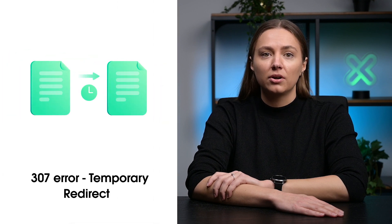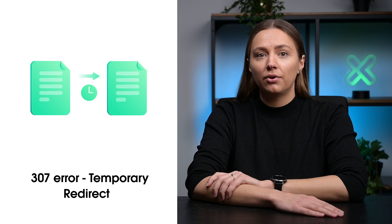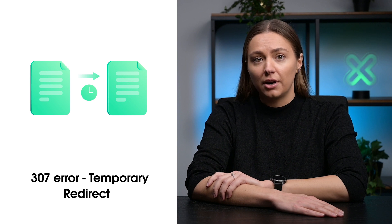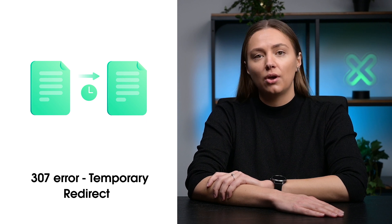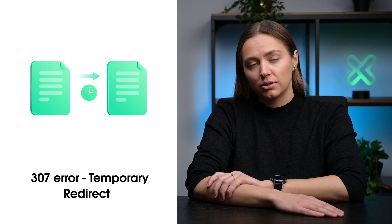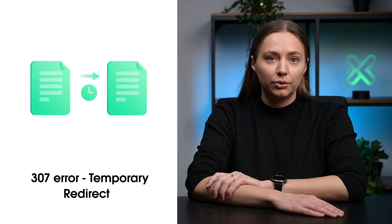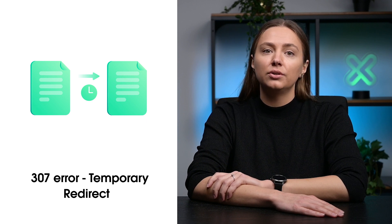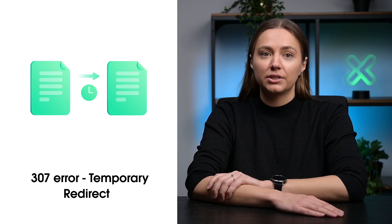The 307 proxy error code means that a client has to be temporarily redirected to a different location to access the resource. When you see this error code, you should follow the redirect and make the request again.